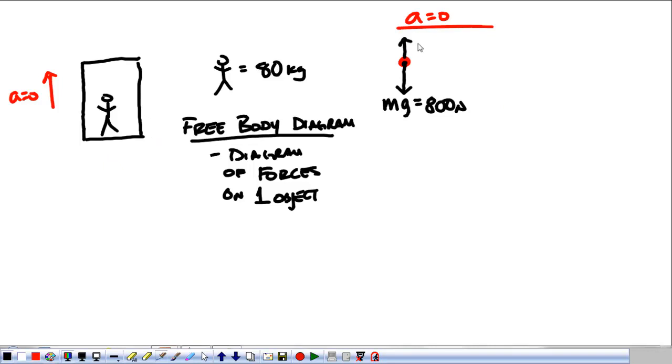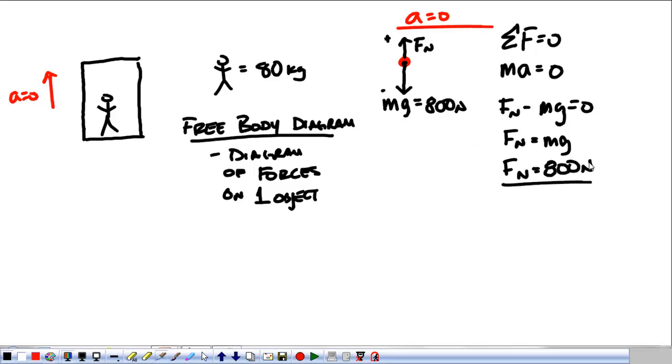Standing in the elevator, we also get the normal force. Now, if the acceleration is zero, that tells me the sum of my forces has to equal zero. I know the sum of my forces is mass times acceleration. The normal force minus the weight has to be equal to zero. This is up, so it's positive, down, so it's negative. That tells me the normal force is equal to the weight, or that normal force is equal to 800 newtons.